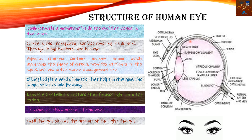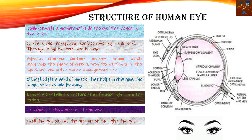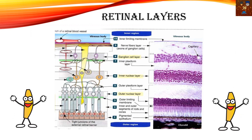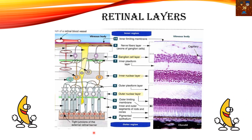The ciliary body is a band of muscle that helps in changing the shape of the lens while focusing — for example, when we need to see something from a very far distance, the ciliary body helps us focus properly. The lens is a crystalline structure that focuses light onto the retina. The iris controls the diameter of the pupil — the pupil changes size as the amount of light changes.